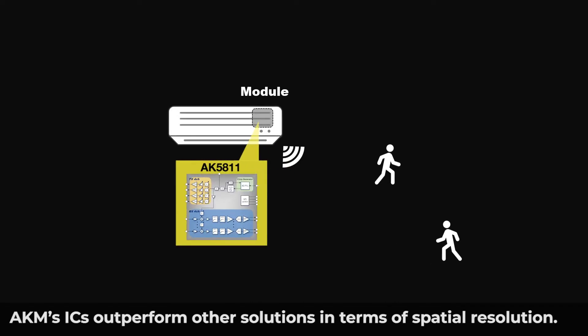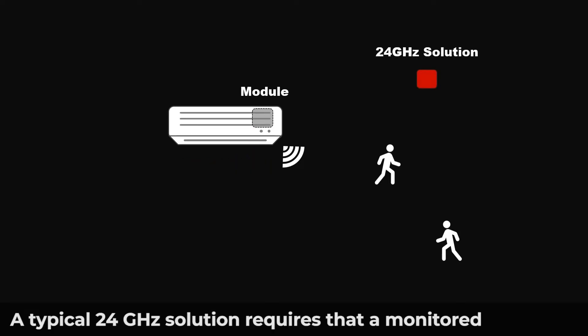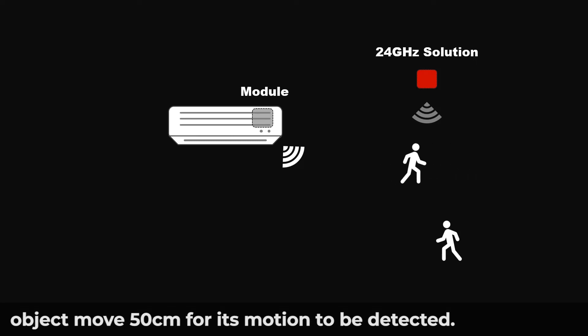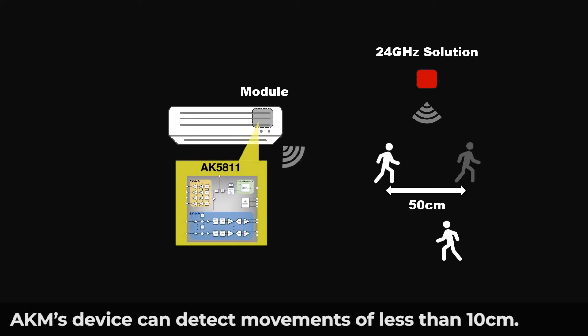AKM's ICs outperform other solutions in terms of spatial resolution. A typical 24 GHz solution requires that a monitored object move 50 centimeters for its motion to be detected. AKM's device can detect movements of less than 10 centimeters.